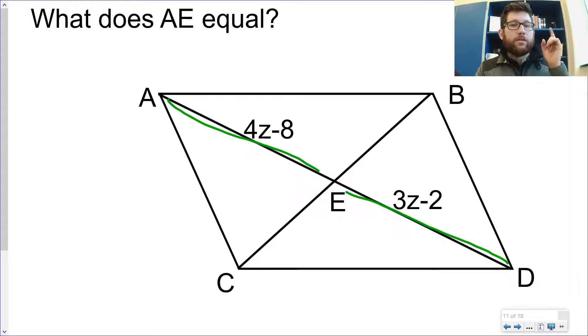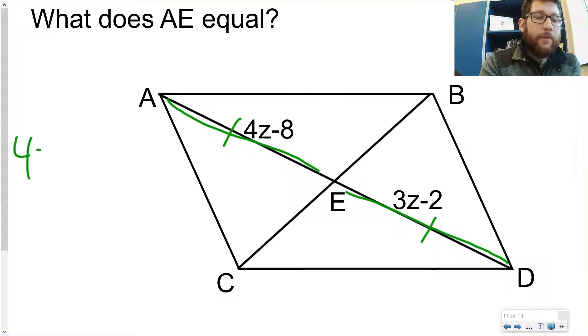And what do I know about diagonals? I know they bisect each other. They cut each other in half, which means these two are the same size. So that tells me how to set it up. 4z minus 8 is equal to 3z minus 2.